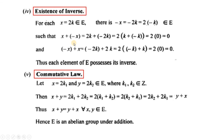The set of even integers including 0 possesses the closure property of addition, associative property of addition, identity element with respect to addition which is 0, and an inverse for every element in E. So the set of even integers together with addition is a group.